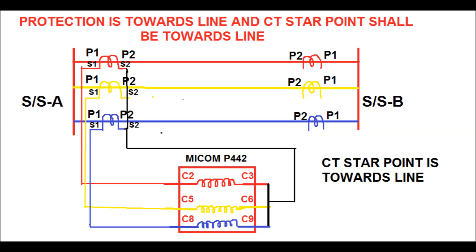In the primary side, P1 shall be connected on the bus side of the substation. In the secondary side, S1 terminal shall be connected with proper polarity to the relay. This is the general concept for proper polarity connection of the CT. The CT star point should be connected towards the line — that is, towards the protected object. Here, the protected object is the line.